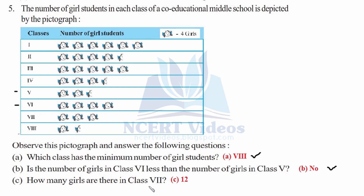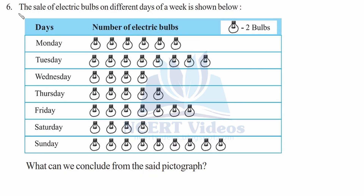Part C: how many girls are there in class 7? Looking at the pictograph, class 7 shows 3 pictures. Since each picture represents 4 girls: 3 × 4 = 12 girls. So class 7 has 12 girls. This completes question 5.